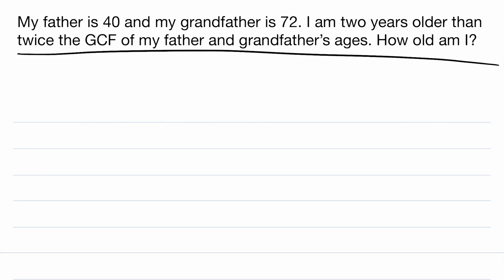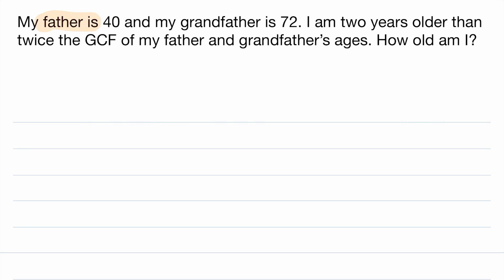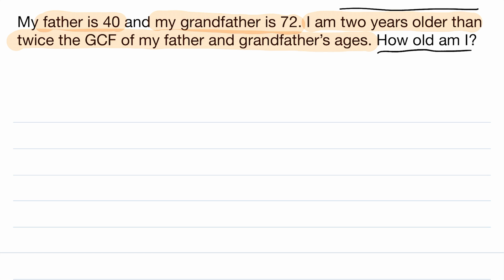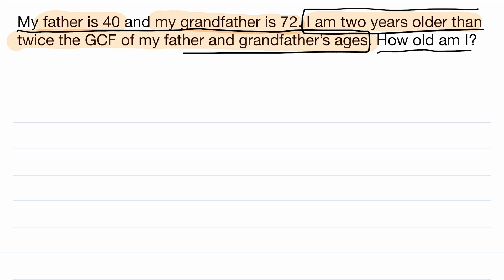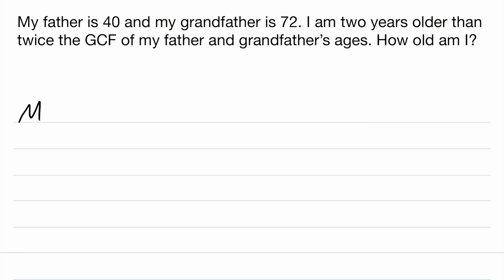So here it is, straight from the comments. My father is 40 and my grandfather is 72. I'm two years older than twice the greatest common factor of my father and grandfather's ages, so how old am I? Well, I tell you how old I am right here. I'm two years older than twice the greatest common factor of my father and grandfather's ages. So let's write this down.